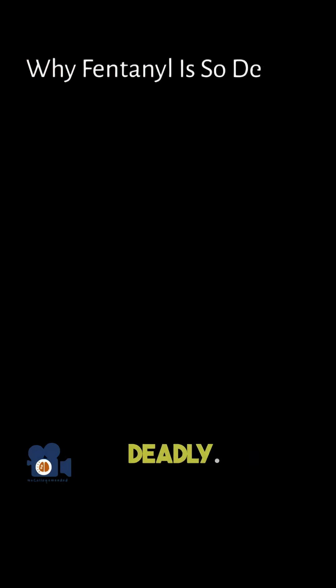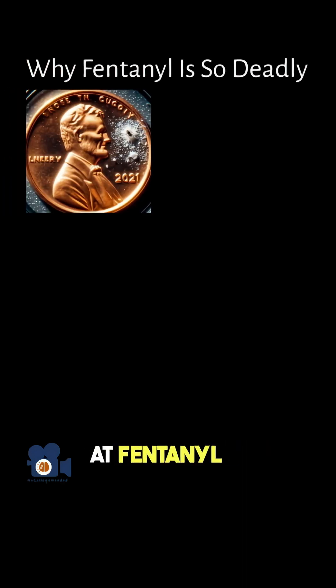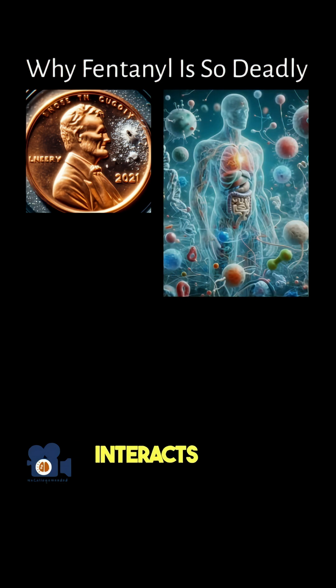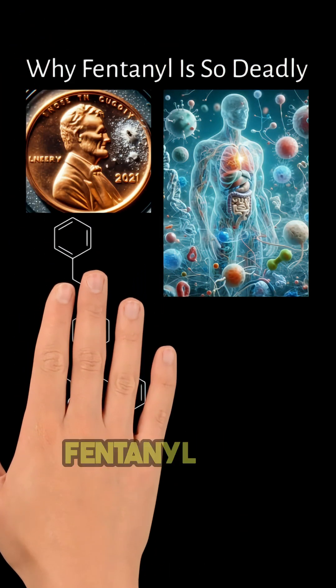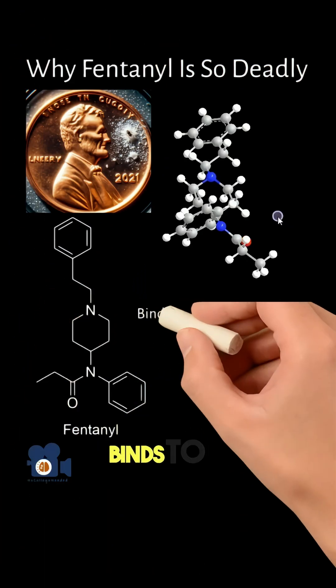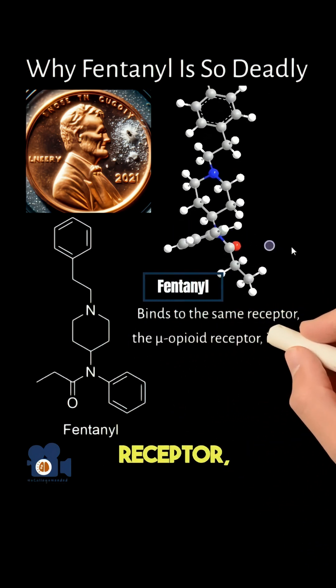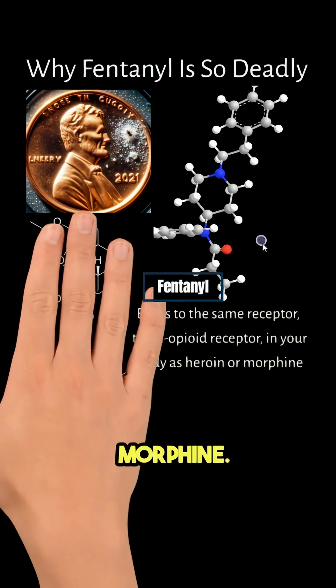This is why fentanyl is so deadly. To understand, you have to look at fentanyl on the molecular level and how it interacts with your body's biochemistry. This is the molecular structure of fentanyl, and it binds to the same receptor — the mu-opioid receptor — in your body as heroin or morphine.